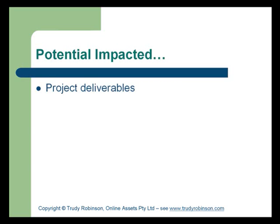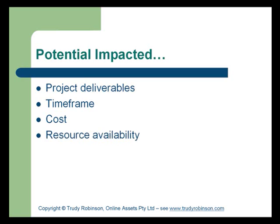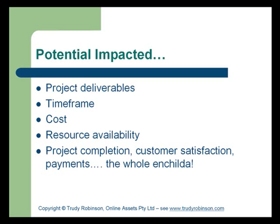The types of things that a risk may impact are the actual outputs and deliverables from the project. It may affect the time frame or the ability to complete the project within the required schedule. Risk may also affect costs or the financial management and outcomes of the project. Risk may also affect the availability of resources and the completion of the tasks allocated within the project. So it's everything — the project completion, the customer satisfaction, payments. Risks can affect a project being completed overall.